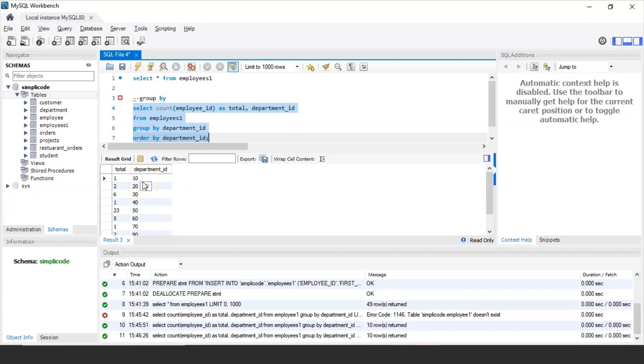Let us execute the statement and see the output. So as you can now see that the department IDs are being displayed in the ascending manner, that is 10, 20, 30, 40, 50 and so on up to 110. So in this way you can use the GROUP BY and ORDER BY statements.